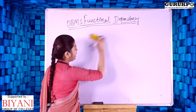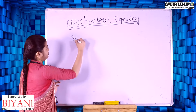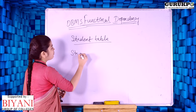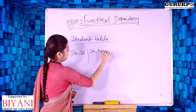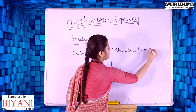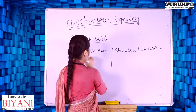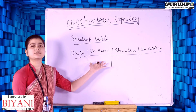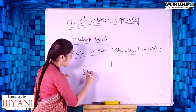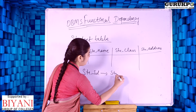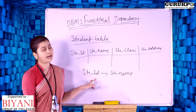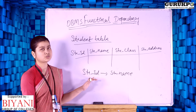Suppose for example we have a student table. In our student table we have columns: student id, student name, student class, and student address. Here the values of student name fully depend on student id. So here we can say student name is functionally dependent on student id, and student name is functionally dependent on student id.